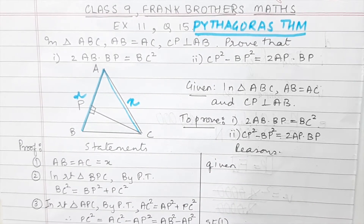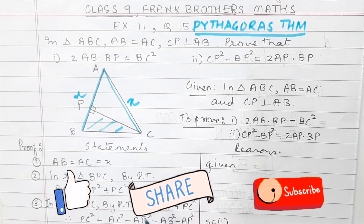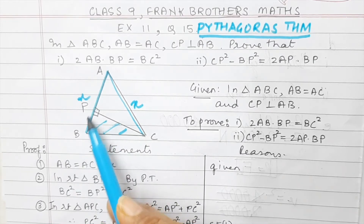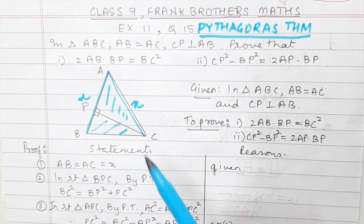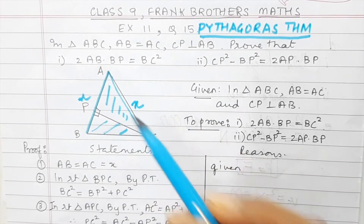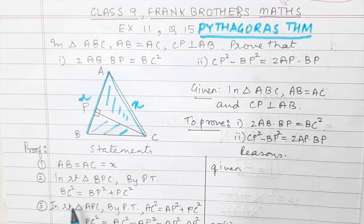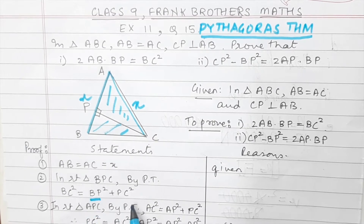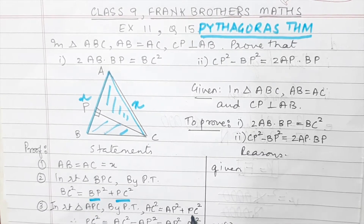Now, can you see the right triangles? Yes. Which are the two right triangles? We will have triangle BPC — in this right triangle, by Pythagoras theorem, the side opposite 90° is BC, so BC square is equal to BP square plus CP square. Which is the other right triangle? In that triangle, by Pythagoras theorem, AC square is equal to AP square plus CP square. Now, because we need the value of BC square equal to BP square plus CP square, we have BP and PC here, and in the second triangle we have PC as well.